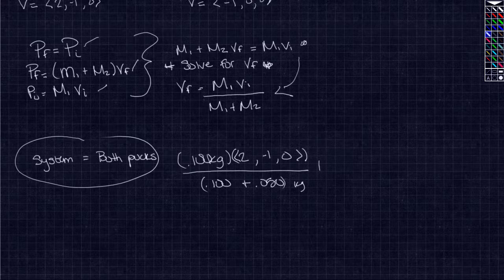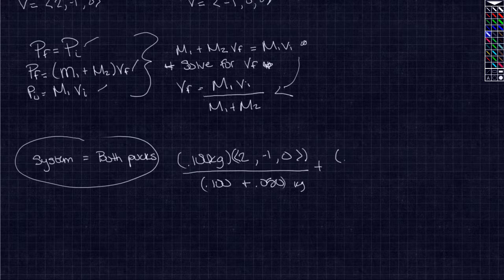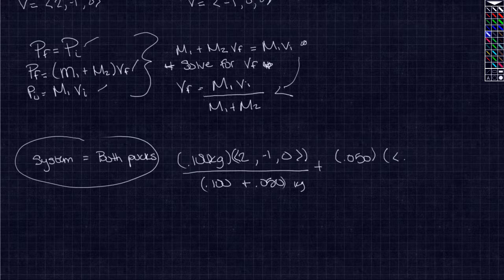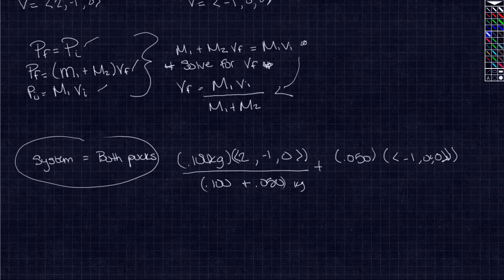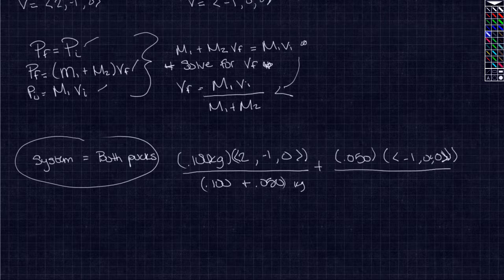And we are going to add that to the other part, B. So 0.050 times the vector negative 1, 0. And we are going to simplify after this.